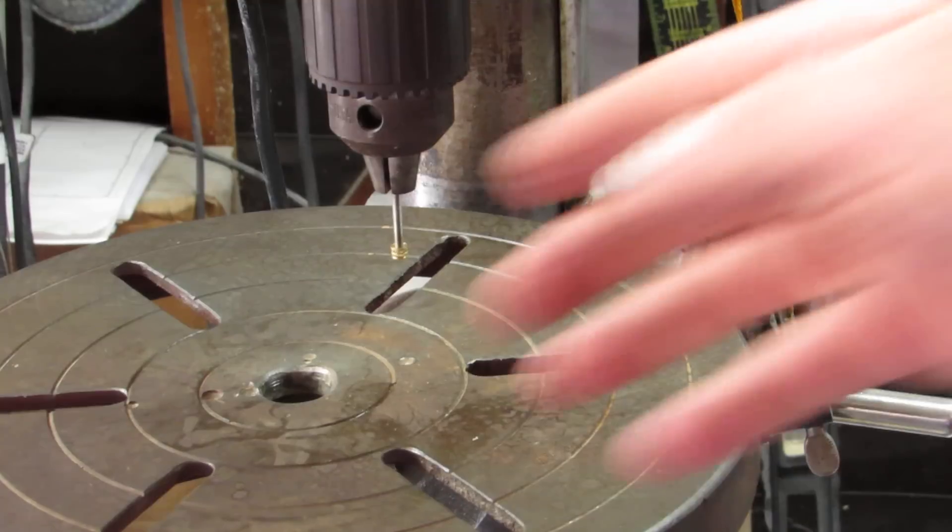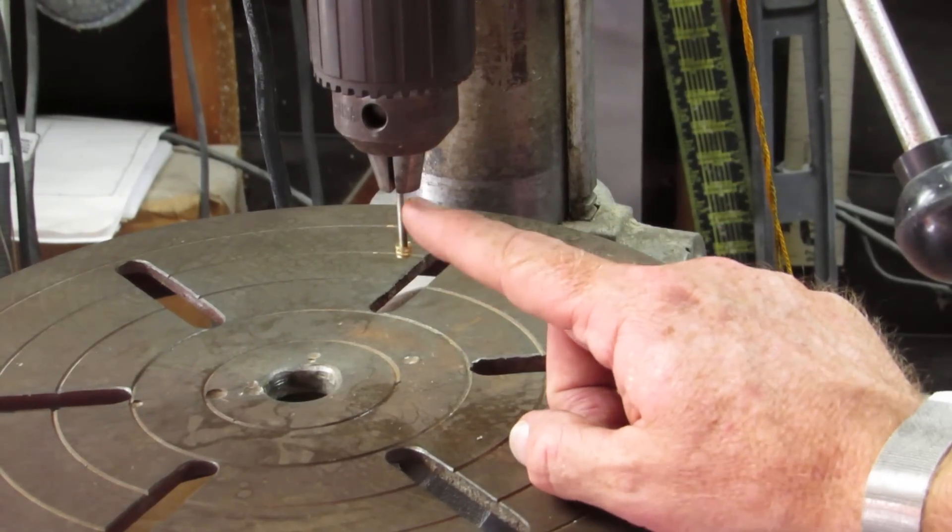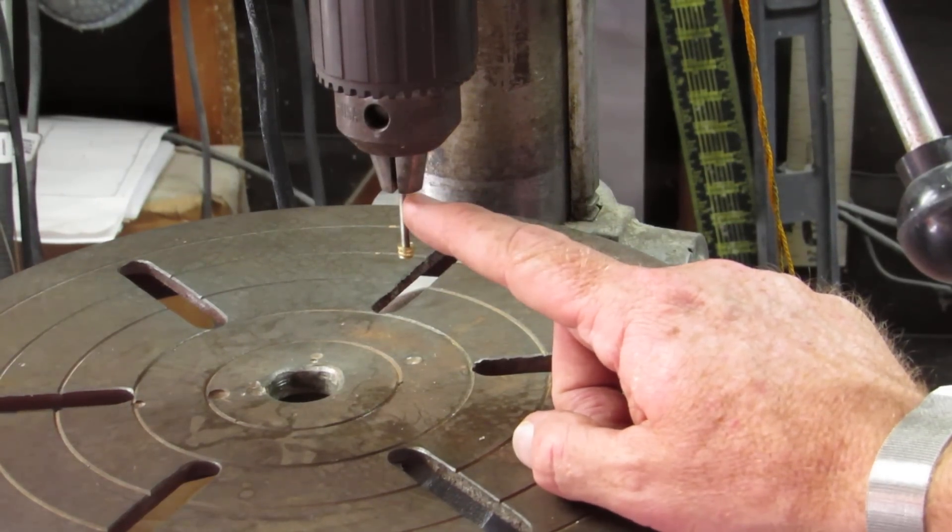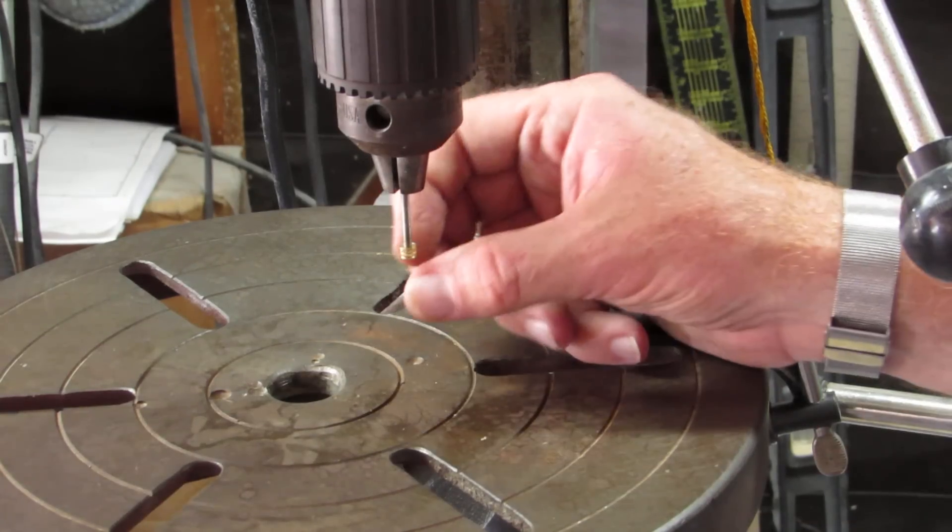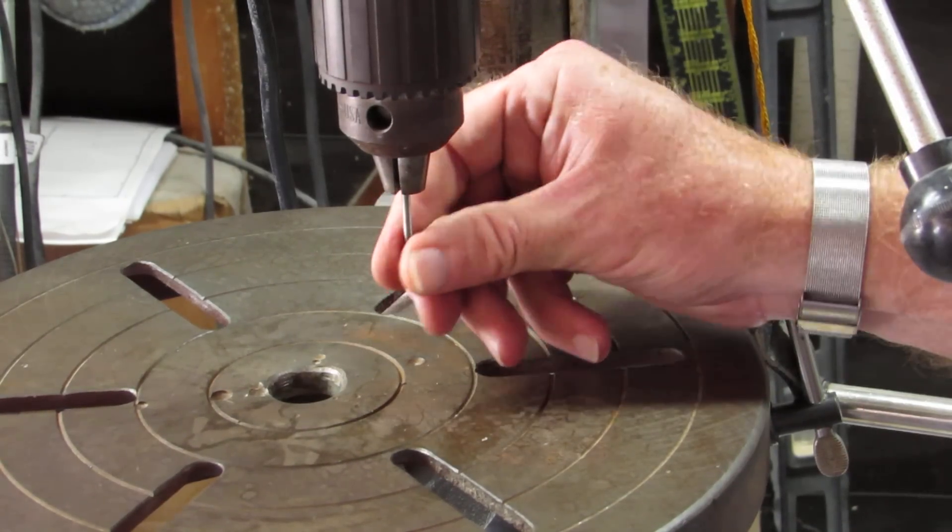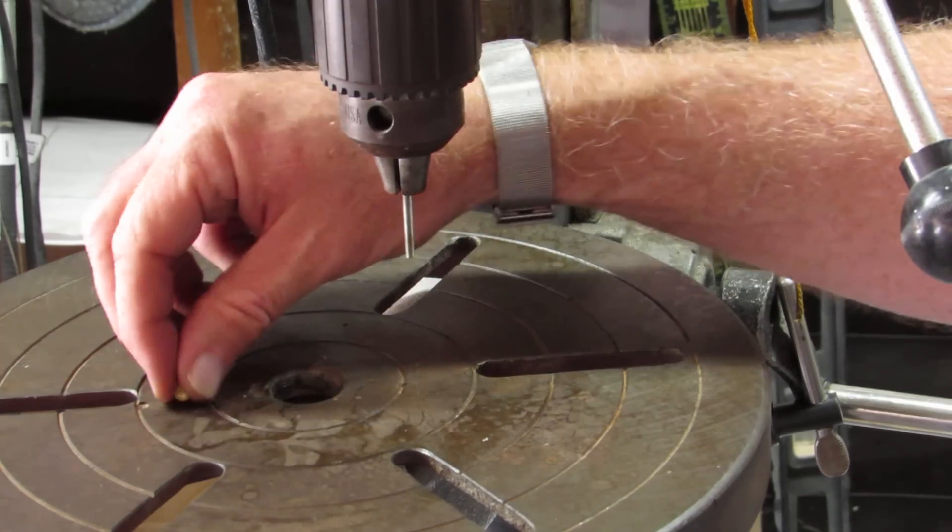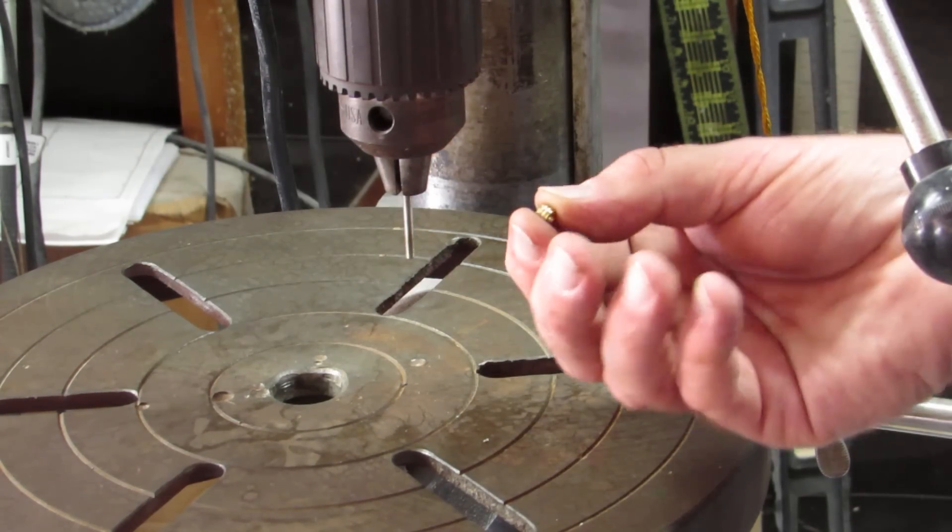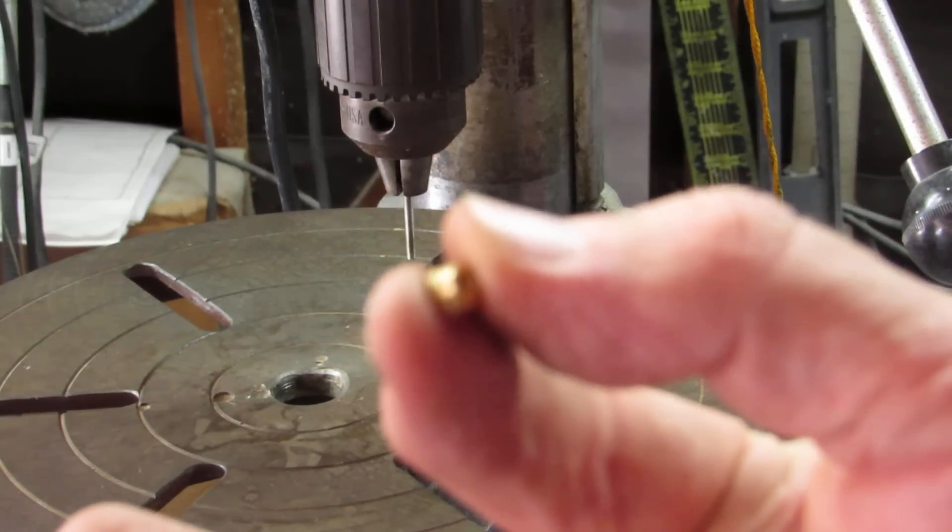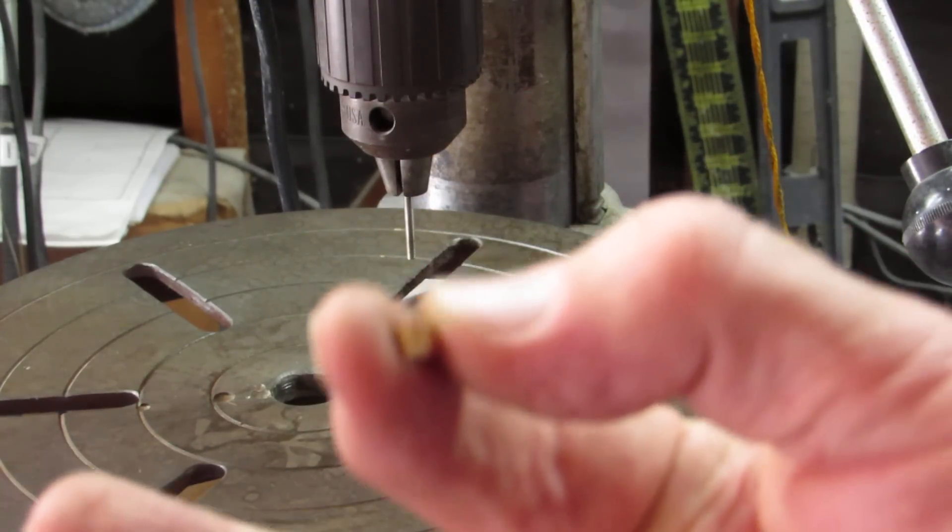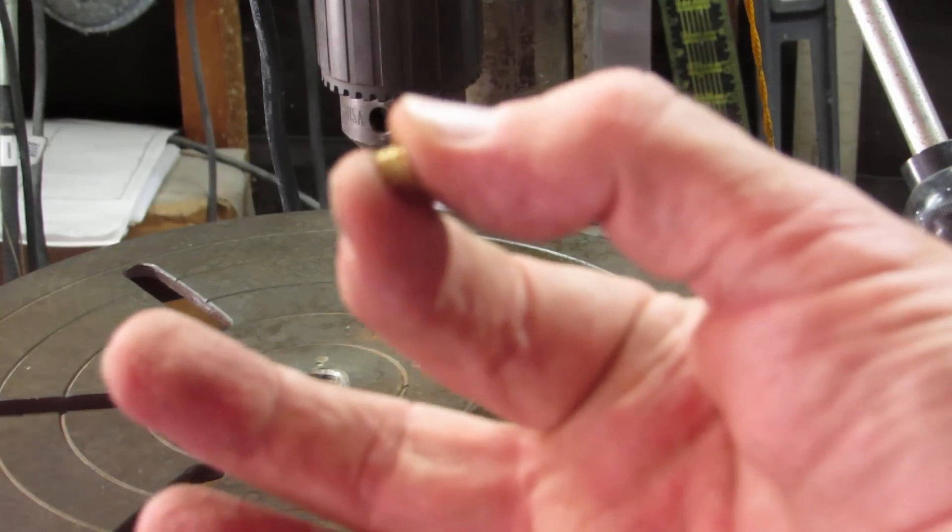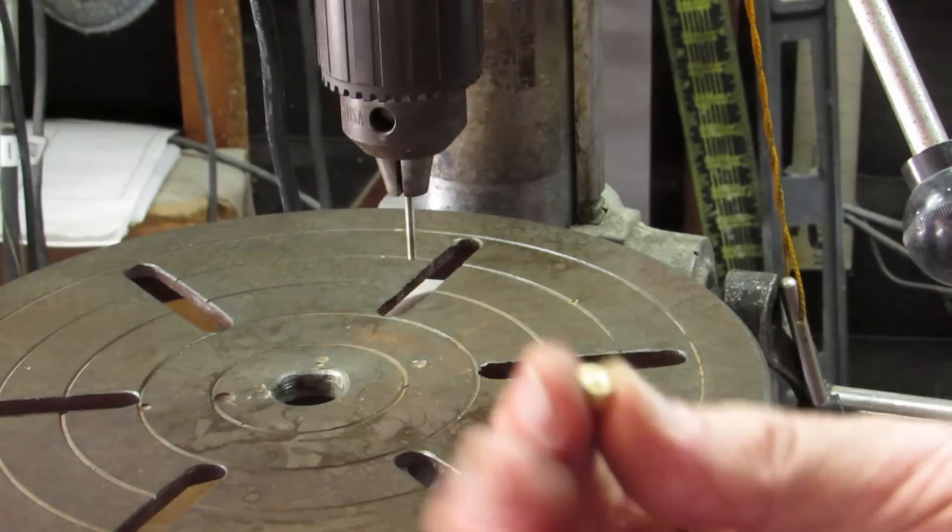All right. So what we have here is a piece of M3 all thread. And this is one of the threaded inserts that we want to install. There's only one way that this goes on correctly. And it's going to be a little hard to see the little serrations, but you have to trust me.